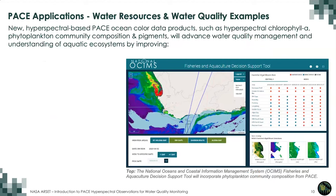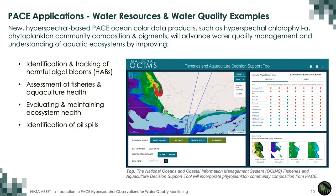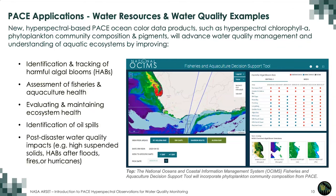The new hyperspectral-based PACE ocean color data products — such as hyperspectral chlorophyll A, phytoplankton community composition, and pigments planned to come in the near future — are going to advance water quality management and our understanding of aquatic ecosystems. They'll do this by improving several important water quality application areas: identification and tracking of harmful algal blooms, assessment of fisheries and aquaculture health, evaluating ecosystem health, and identifying oil spills or water quality impacts after disasters like major floods.